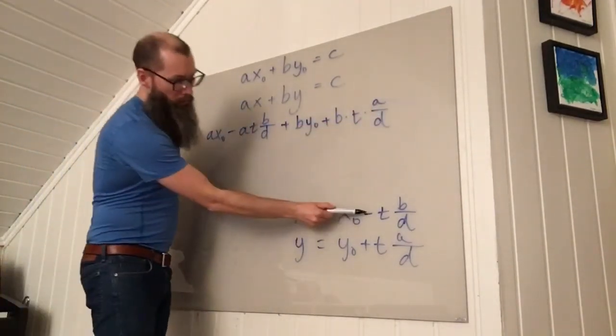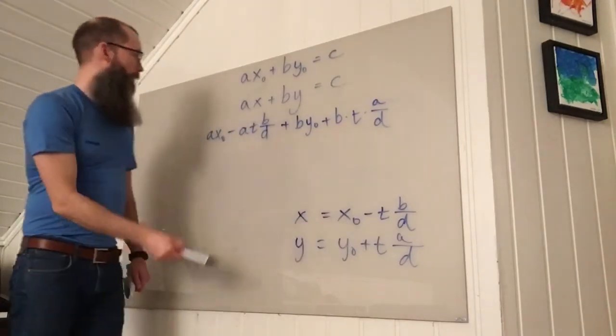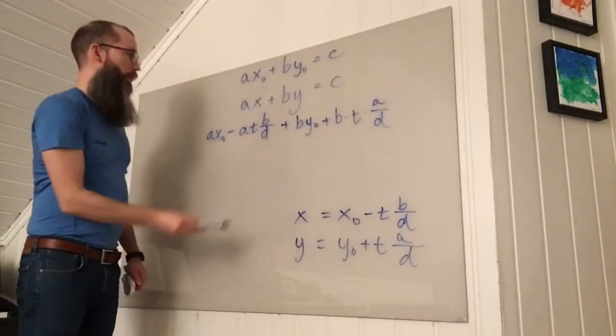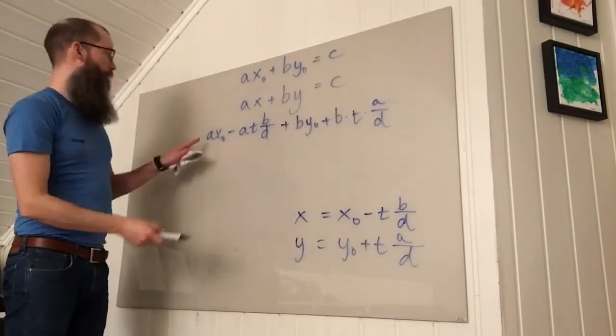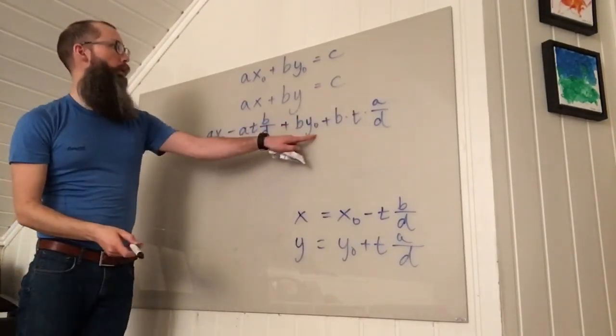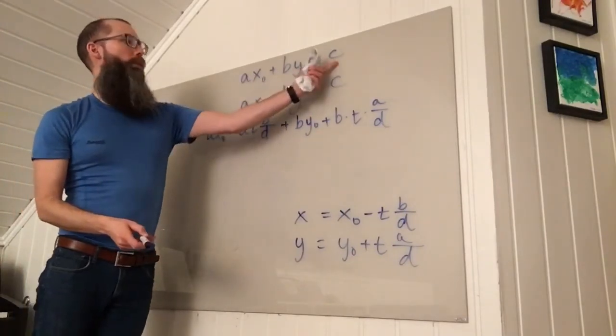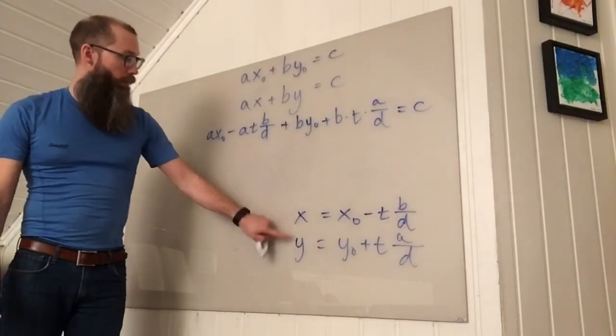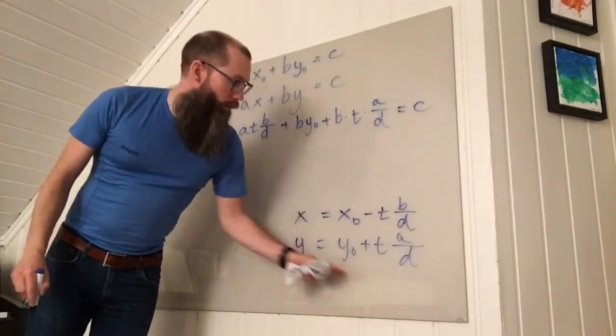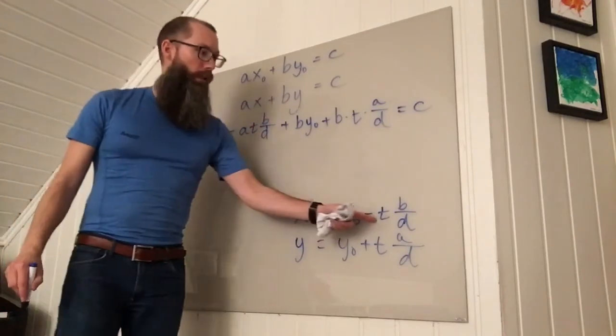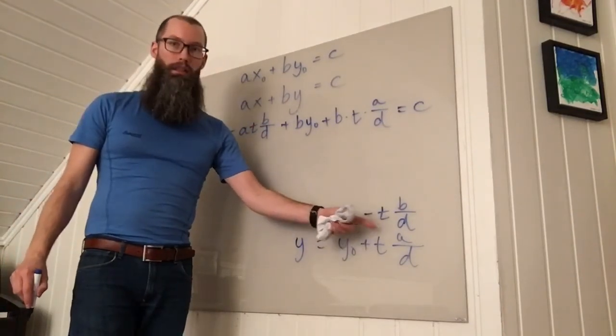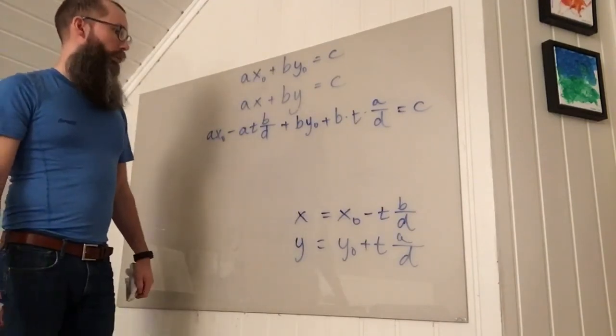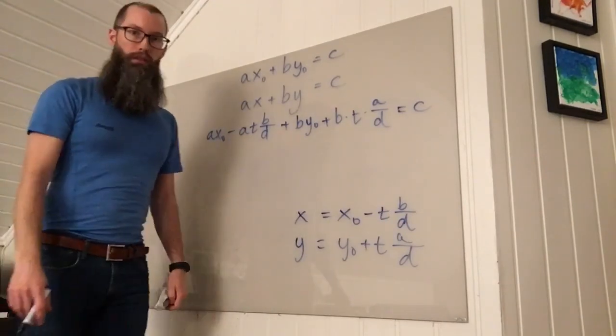And as you can see, these opposite signs imply that these two will cancel. So these cancel out. And I'm left with A X0 plus B Y0. And that sum equals C. So this shows that X and Y given by this expression solve the equation for any value of T. So T can be an arbitrary integer, and we have a solution. So that's all of the solutions of the Diophantine equation.